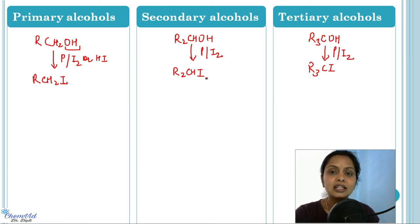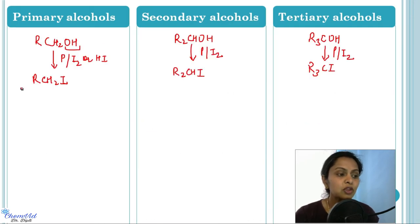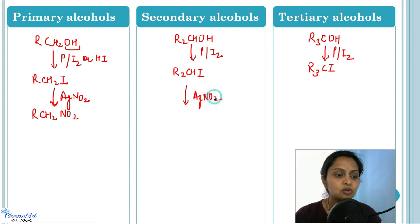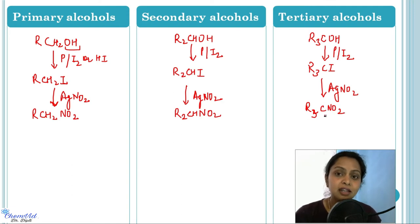In Step 2, the alkyl iodides are treated with silver nitrite (AgNO₂). The products are the corresponding nitroalkanes: RCH₂NO₂ from primary alcohol, R₂CHNO₂ from secondary alcohol, and R₃CNO₂ from tertiary alcohol.